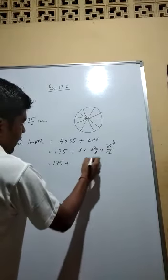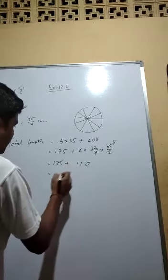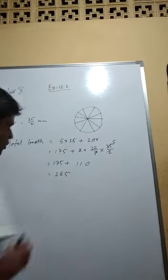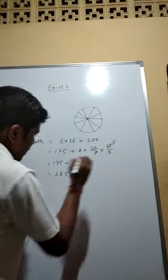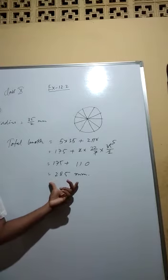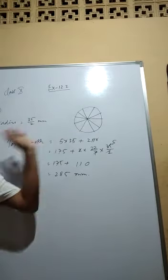11 into 5, 110. 285 mm. So 285 millimeter is the total length of this brooch.